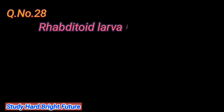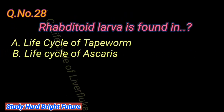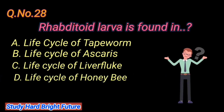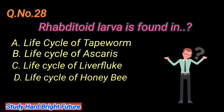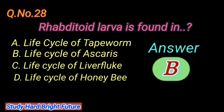Question number 28: Rhabditoid larvae is found in. A. Life cycle of Taenia, B. Life cycle of Ascaris, C. Life cycle of liver fluke, D. Life cycle of honeybee. The right answer is B. Life cycle of Ascaris.